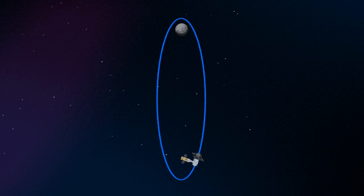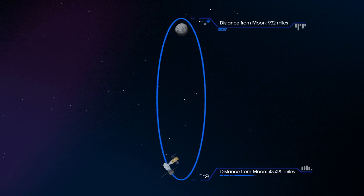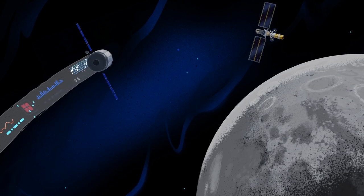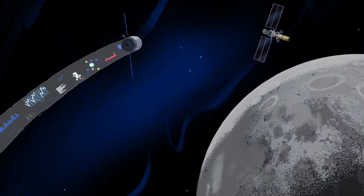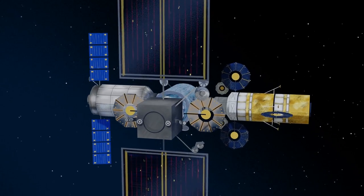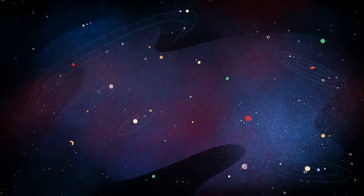But the real key in this approach is placing Gateway in a unique halo orbit to perfect the maneuvers needed for Mars missions. And with the growing list of commercial and international opportunities, Gateway is the ideal hub between Earth and all that lies beyond.